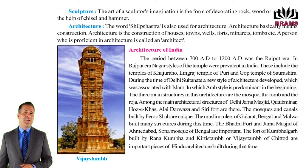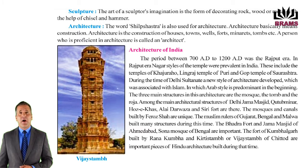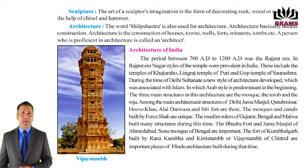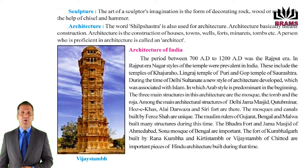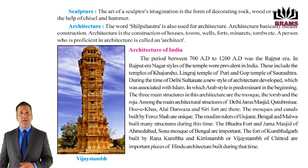The mosques and canals built by Firoz Shah are unique. The Muslim rulers of Gujarat, Bengal and Malwa built many structures during this time. The Bhadra Fort and Jama Masjid of Ahmedabad, and the Sona Mosque of Bengal are important. The fort of Kumbhalgarh built by Rana Kumbha, and the Kirtas Stambha or Vijay Stambha of Chittod, are important pieces of Hindu architecture built during that time.